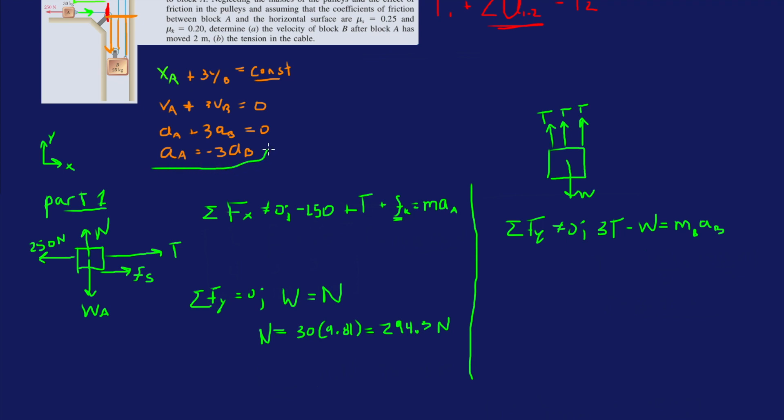This is where this equation comes in handy. We can relate the acceleration of A to the acceleration of B. So we know that if A is negative, which means it's going to the left, AB is going to be positive and moving upwards, which makes sense. If you pull this to the left, B is going to go up.